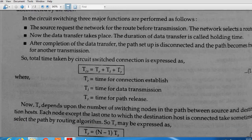The total time taken for circuit switching is a summation of Te plus Tt plus Tr. Te is the time for connection establishment, Tt is the time for data transmission, and Tr is the time for path release.